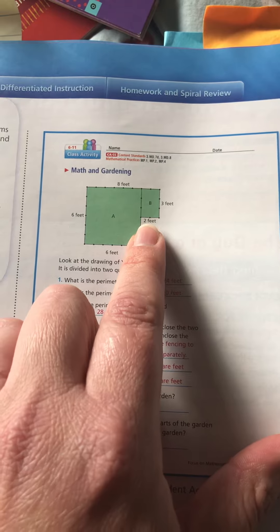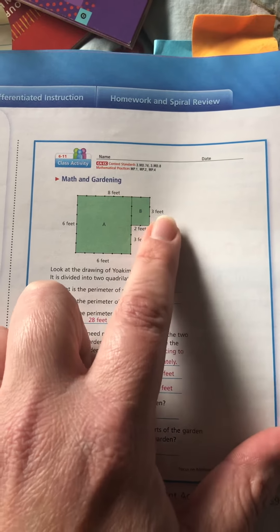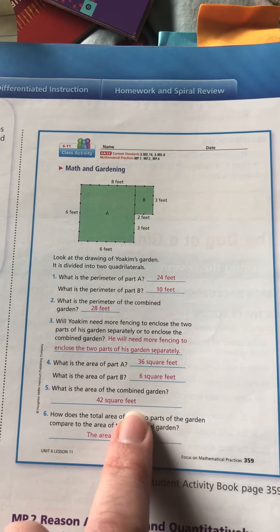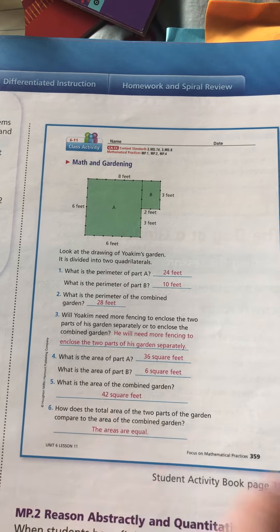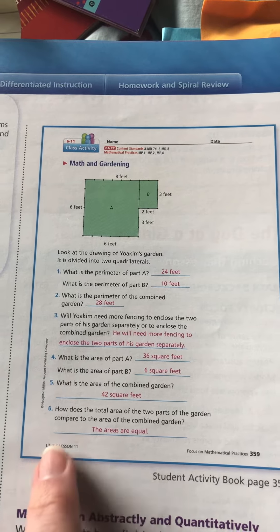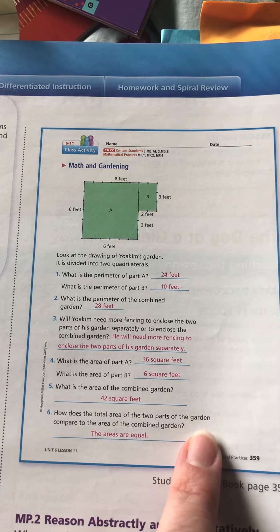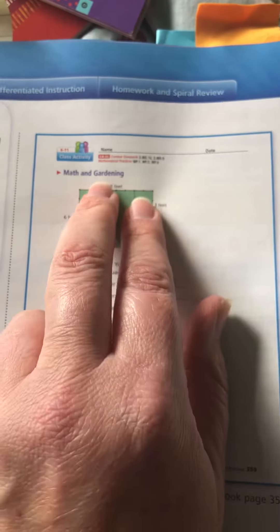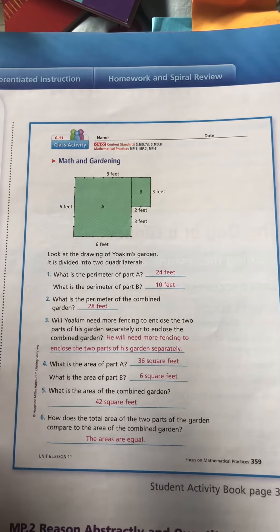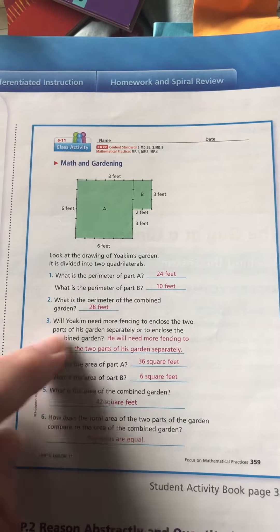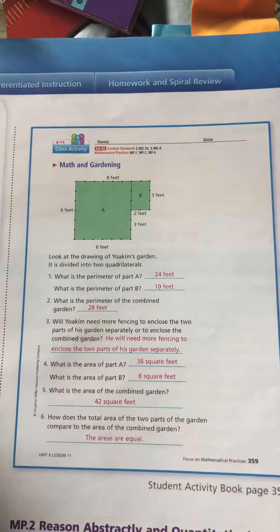The area for part B would be two by three - two times three is six square feet. And the area for the combined garden, you would just need to add up those two numbers, which would give you 42 square feet. How does the total area change if these two different gardens were separated? It wouldn't change at all - it would still be the same. The only thing that would change would be the perimeter, because then you have an extra side.